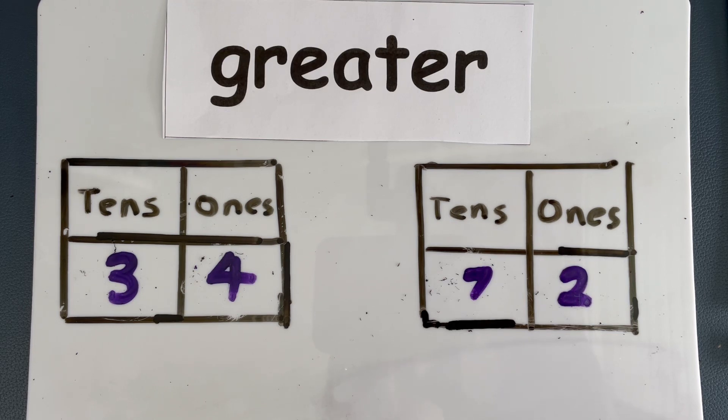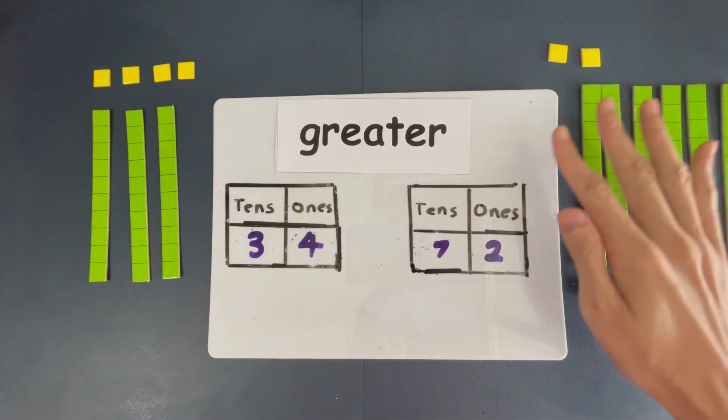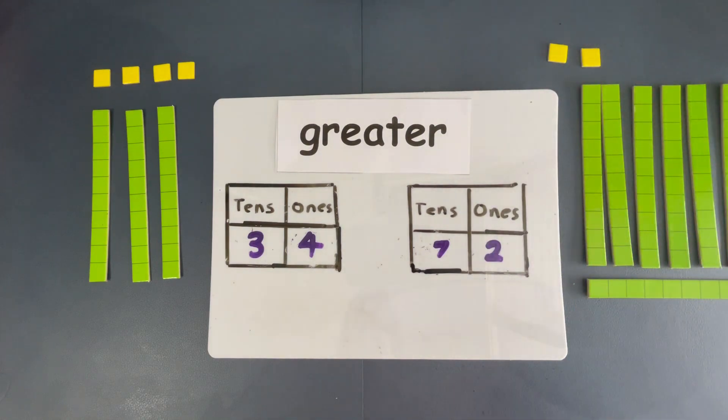And just in case you can't see it, all right? You can't visualize it. Here you go. This is 34. And this is 72. You can see so many tens here. And because there are so many tens, this is the greater number.